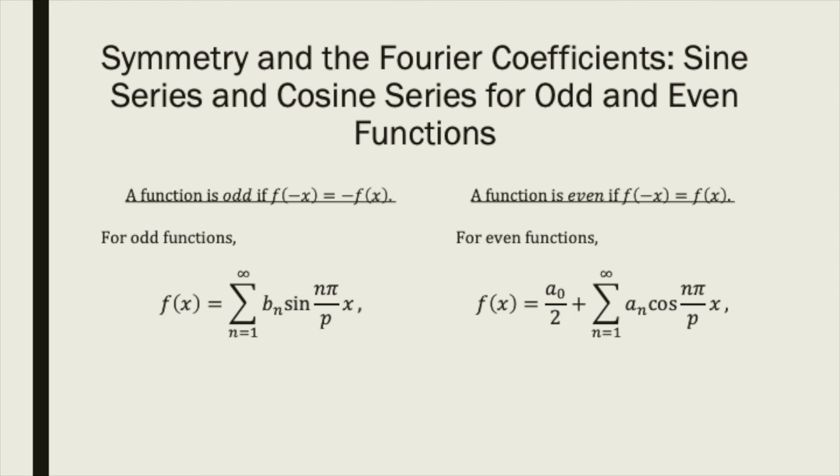One last thing. Did you notice that in the Fourier series of the function f of x equals x, the coefficient a_0 and the a_n were all equal to 0? That wasn't a coincidence. It was because the function has a certain kind of symmetry about the y-axis. That is, for all points x on the real line, f of negative x is equal to negative f of x. We say that functions which exhibit this kind of symmetry are odd functions.